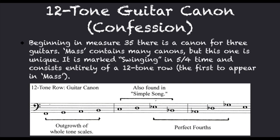Beginning in measure 35, there is a canon for three guitars. Mass contains many canons, but this one is unique. It is marked swinging in 5/4 time, and consists entirely of a twelve-tone row — the first to appear in Mass.